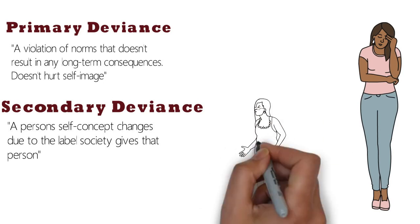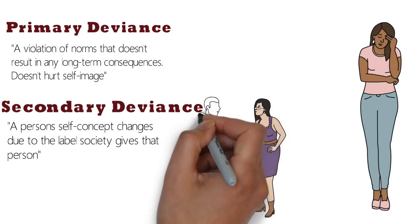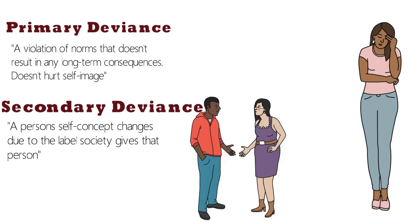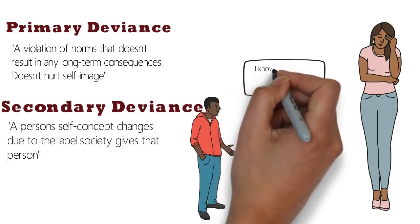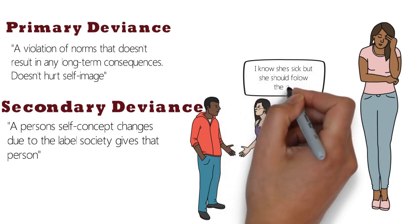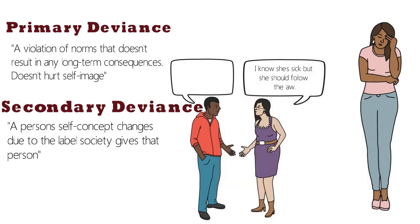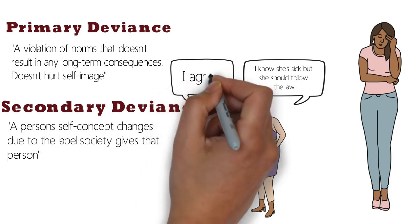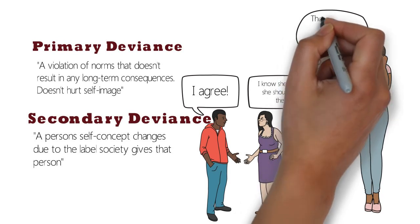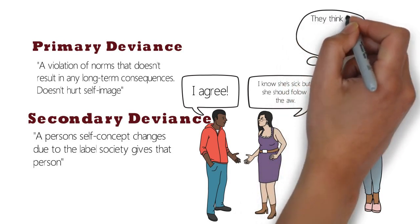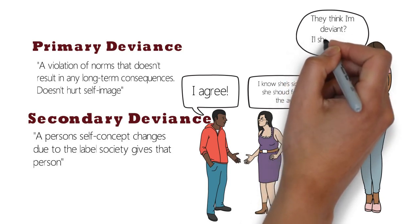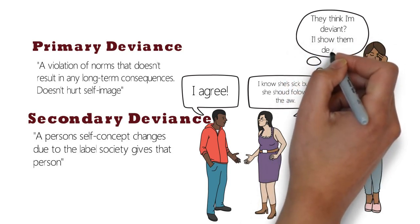One deviant act may not change the way society reacts or the way a person sees themselves. In fact, we all likely recall when we have engaged in some type of deviant act. But when society puts a label on us, our self-concept begins to change. Sarah starts to see herself as deviant even though she believes there is a good reason for her to buy marijuana. She adopts the label and, in essence, begins to live that label, even if deep down she knows it isn't who she truly is.